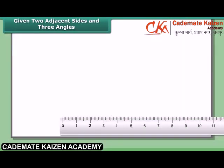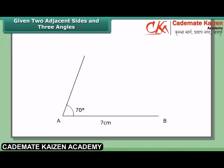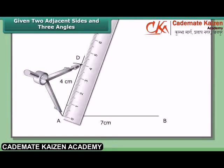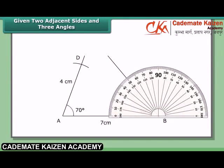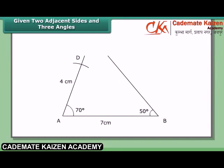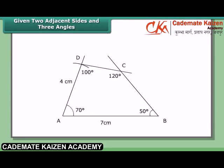Step 1: Draw line segment AB = 7 cm. Draw angle A = 70° using a protractor. With A as center and radius 4 cm, cut an arc on the line for AD. At B, draw an angle of 50°. At D, draw an angle of 100° with a protractor. Let the arms of these angles meet at C. Then ABCD is the required quadrilateral.